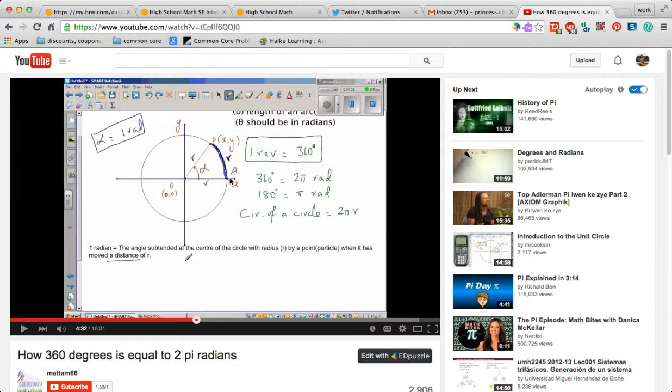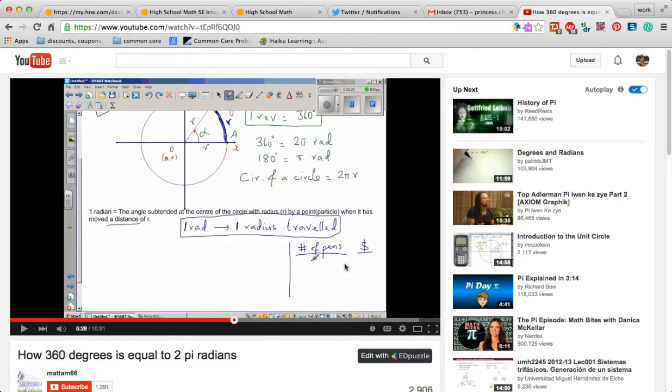And then he tries to explain why is it that when we go through the whole circle we get two pi radians. Well, he comes out with this example over here. You have number of pens and you have dollars, right?